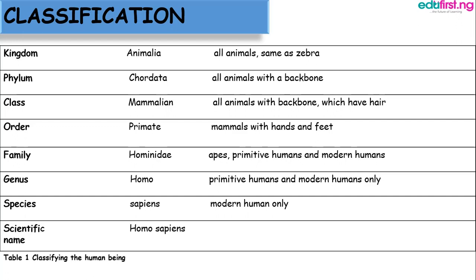We now look at a table showing how this classification system can be used to classify human beings. The kingdom is Animalia — the same as the zebra. The phylum is Chordata — animals with a backbone. The class is Mammalia — animals with a backbone that have hair on the body. The order is Primate. The family is Hominidae — apes, primitive humans, and modern humans. The genus is Homo — primitive and modern humans only. The species is sapiens — modern humans only — giving the scientific name Homo sapiens.